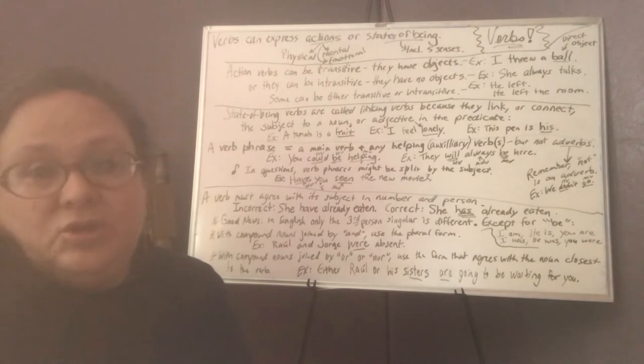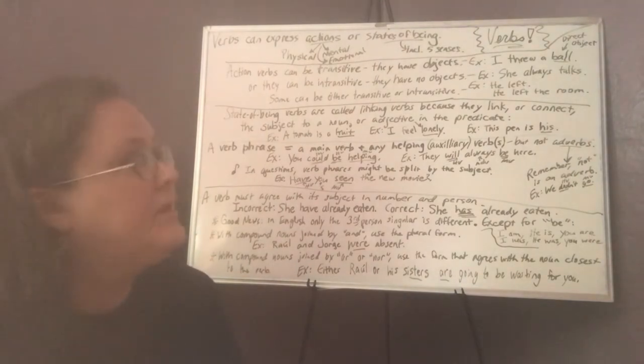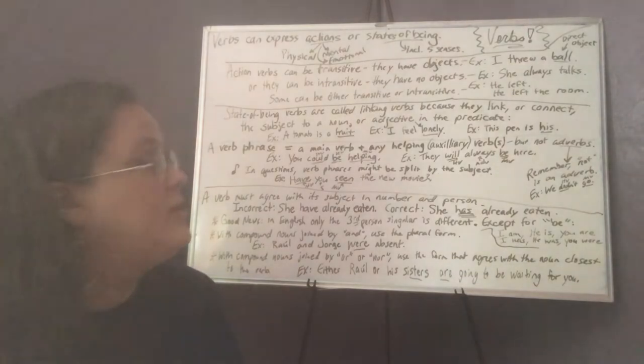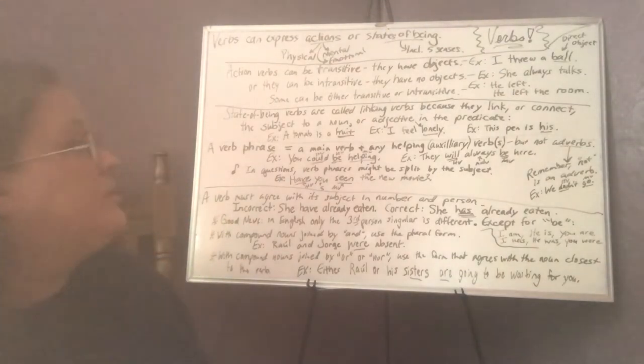States of being can include the be verbs: am, is, are, was, were, be, being, and been. They can also include words like becoming. They can also include words that are linked with the five senses, like that smells bad. Smells would be a linking verb or a state of being verb. And we'll get back to linking or state of being verbs in a minute.